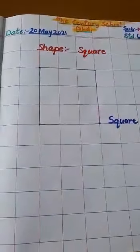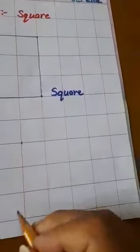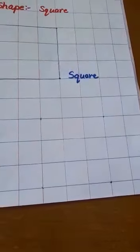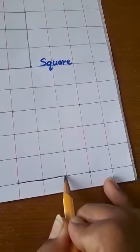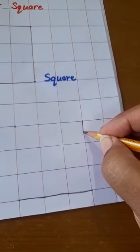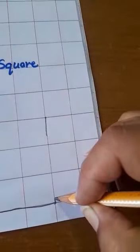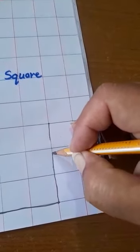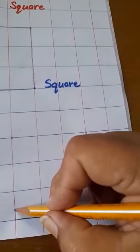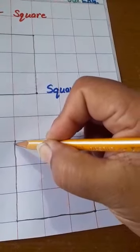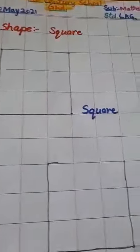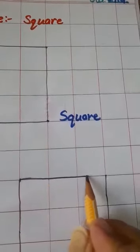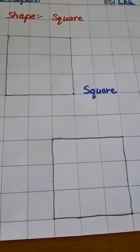Okay. Now we will draw one more time. 1, 2, 3, 4. These are 4 dots. Now we will join these dots to make a square. Like this, we will draw on the line. This is square.